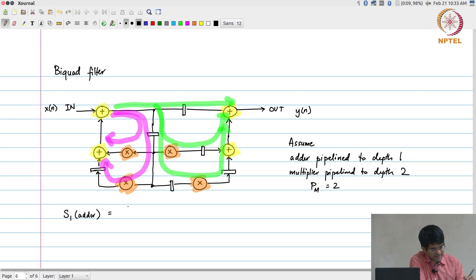I am going to call the operations themselves, I will just label all of them. This is a1, a2, a3, a4, m1, m2, m3, m4.